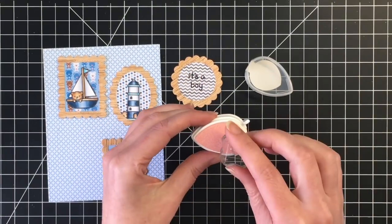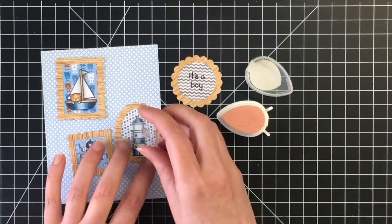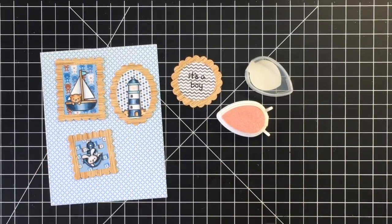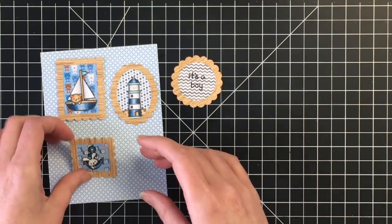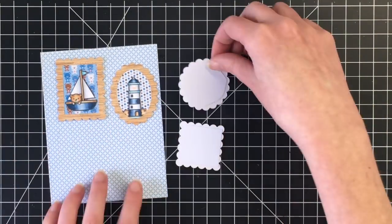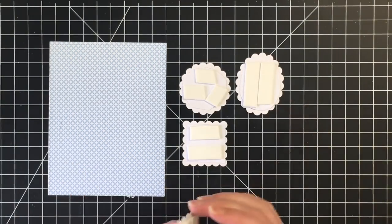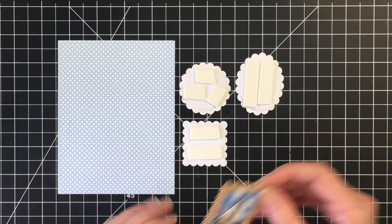I grabbed out my Versamagic dew drop in Pixie Dust. I'm going to add a little pink heart to the center of the lighthouse just because there was some pink on the pattern paper and then on the cheeks of my little critters that I colored as well.